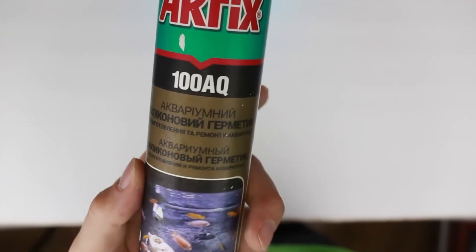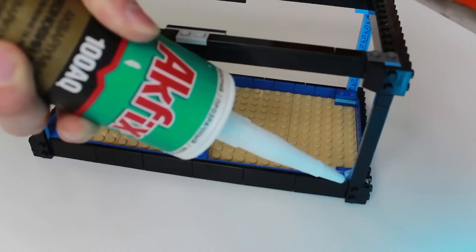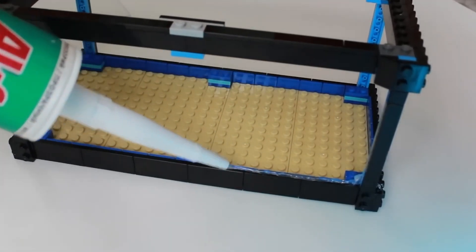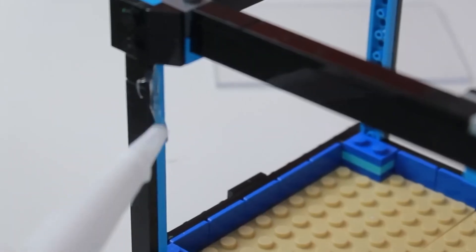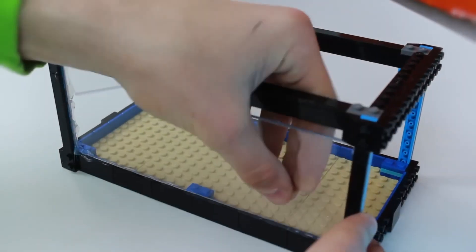Now we should find an aquarium sealant that will not be toxic for fish after curing. Open, screw the tip and apply around the perimeter of the frame. After that we should put the glasses so that they are glued to the body.